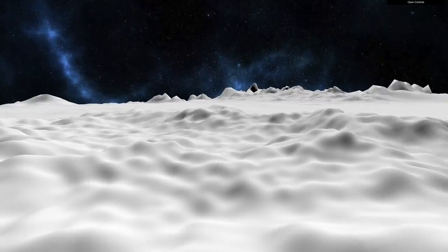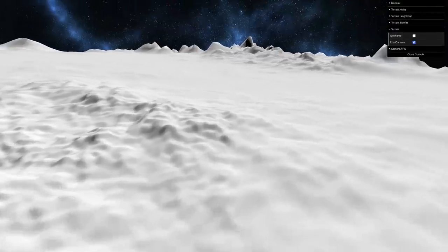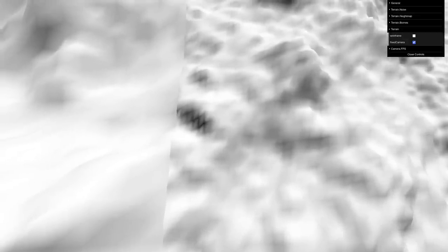Let's fix the terrain camera in place and wander around. Now this might be just me being picky, but look at those weird lines. Let's zoom in a bit. You see those? Those are lighting discontinuities, and they're caused by the fact that the normals on the edges between chunks don't match up exactly. Let's try to fix this.